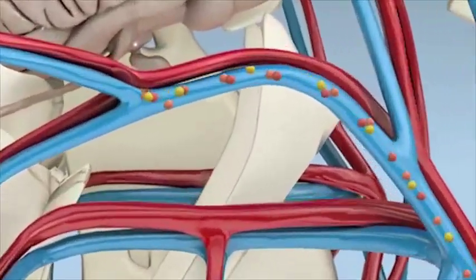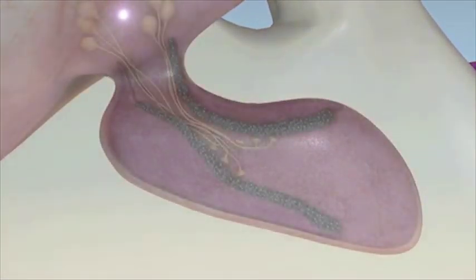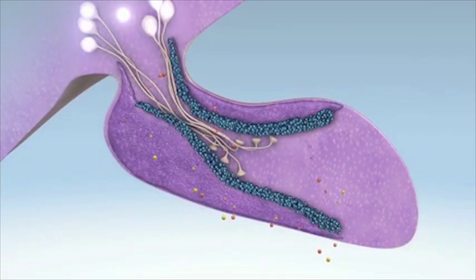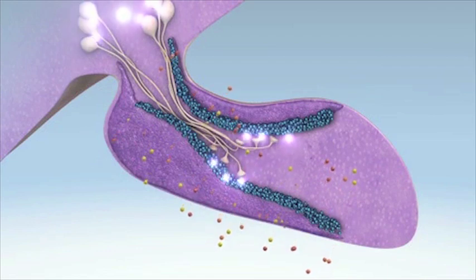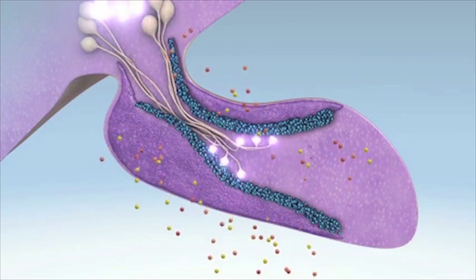The hypothalamus generates releasing and inhibiting factors that act on the pituitary to either stimulate or inhibit the secretion of specific pituitary hormones.